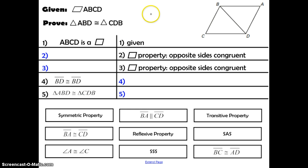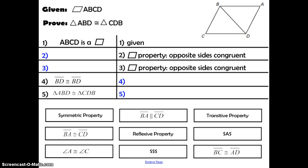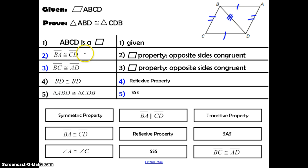The last two things we're going to work on are proofs. It's been a while since we've worked on a proof, so we're just going to ease back into it. Pause, write this down, try to complete the proof on your own, and check back once you've finished. Hopefully these are the answers you got. It's possible you switched statements 2 and 3 — that's totally fine, because they have the same reason.